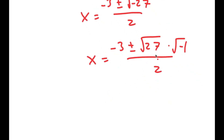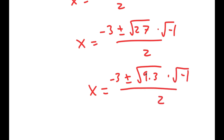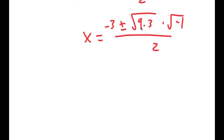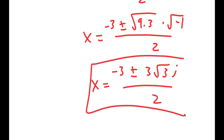This simplifies to negative 3 plus or minus the square root of 27 times the square root of negative 1 over 2. Since 27 equals 9 times 3 and the square root of 9 is 3, I get x equals negative 3 plus or minus 3 root 3 times i, where the square root of negative 1 equals i. So these are two more complex solutions to this equation.